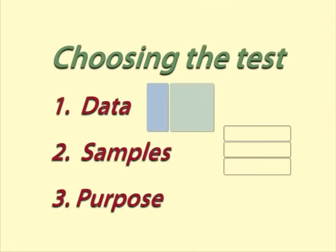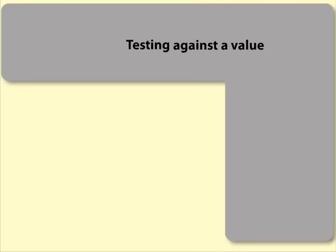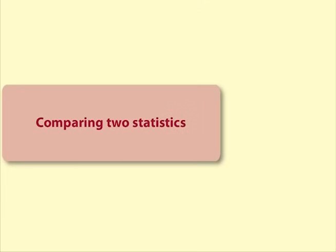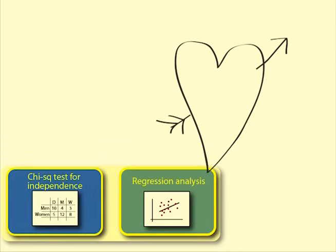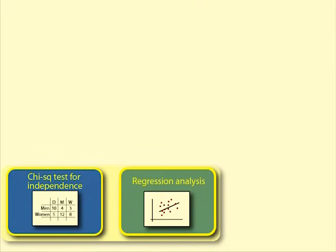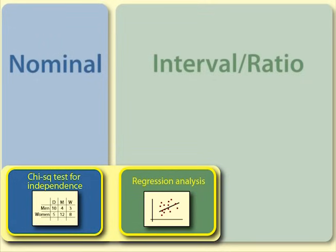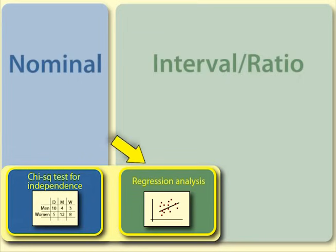Finally, Question 3: we ask what is the purpose of the analysis? We can be testing against a hypothesized value, comparing two statistics, or looking for a relationship. Chi-squared test for independence and regression are similar in that they are looking at the relationship between two variables. The difference is in the kind of data — if you would summarize the data in a table, use a chi-squared test for independence; if you would put it on a scatter plot, use regression analysis.